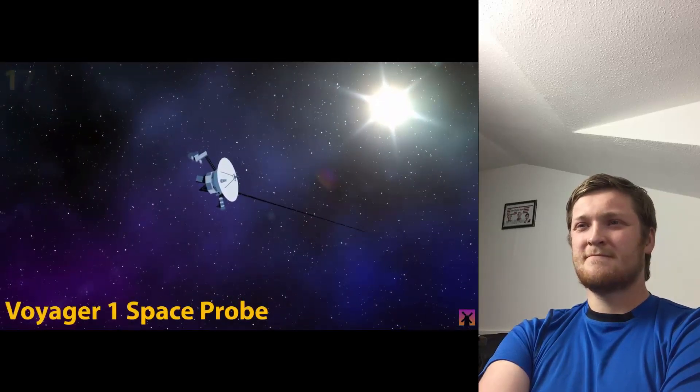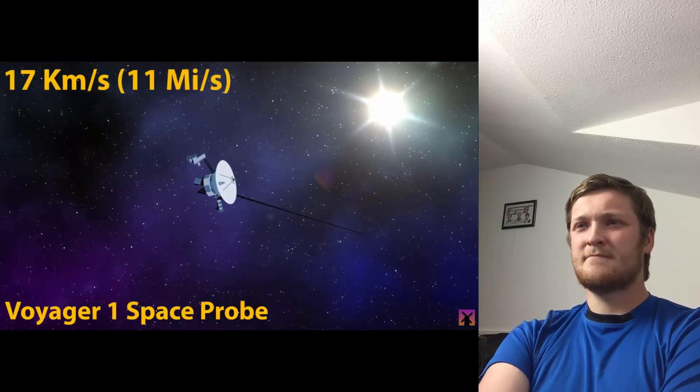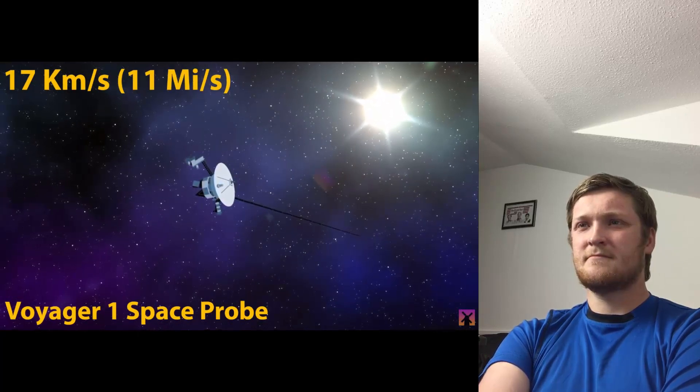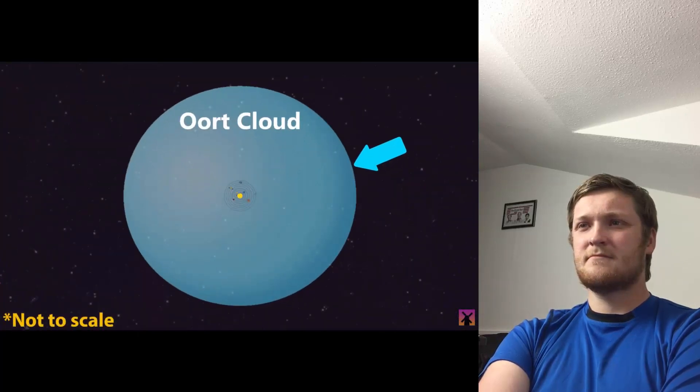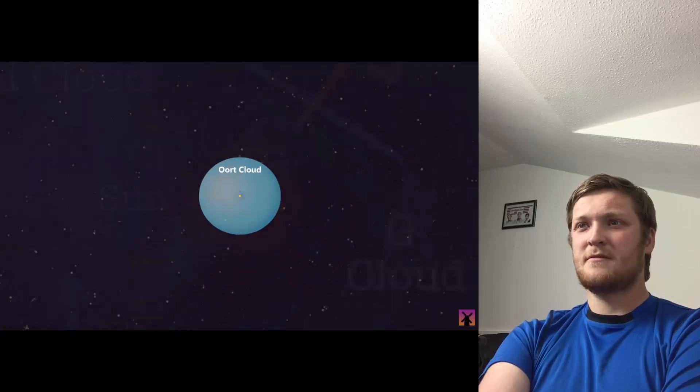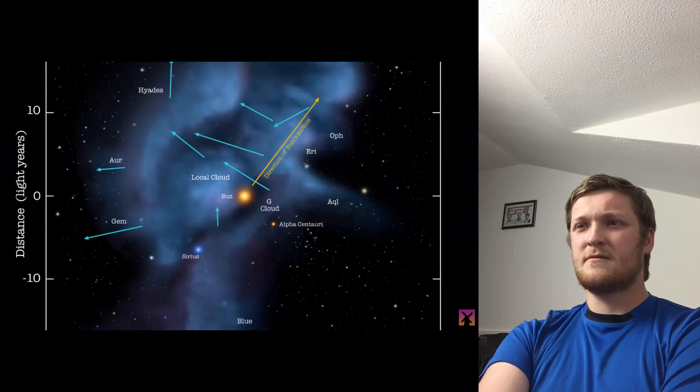Voyager 1 is currently traveling at 17 kilometers every single second. But even at that speed, it won't break out of the reach of our solar system for another 30,000 years. Once we go beyond the solar system, we arrive in our interstellar neighborhood.